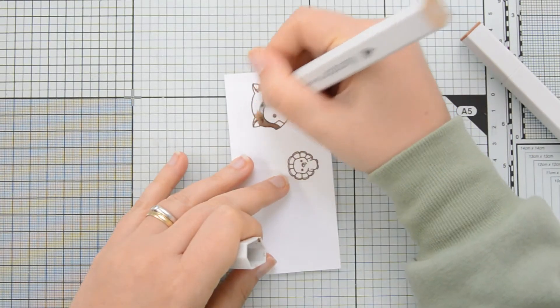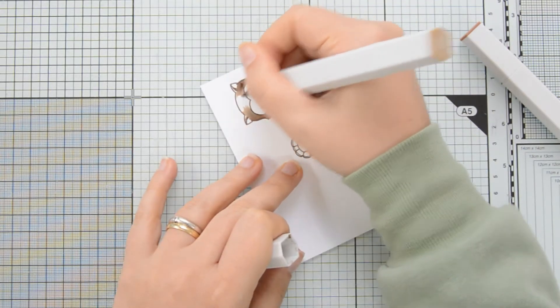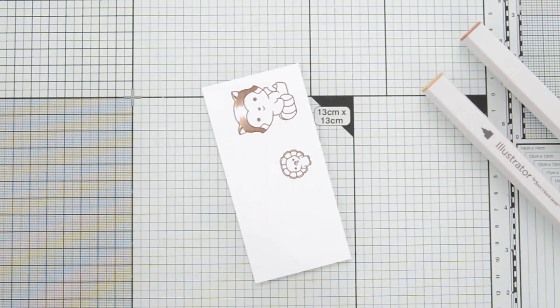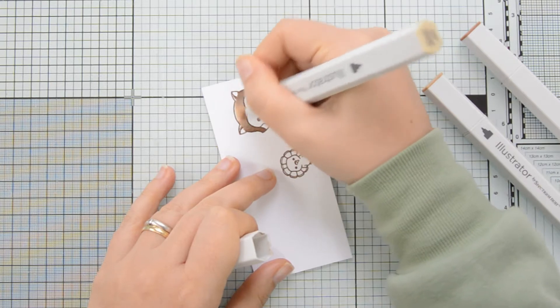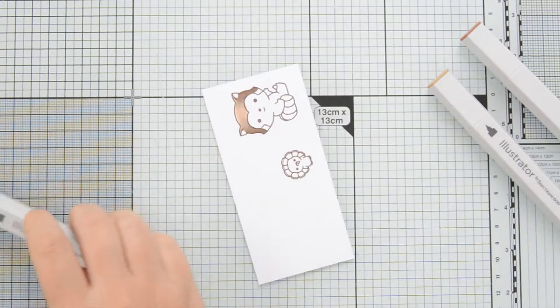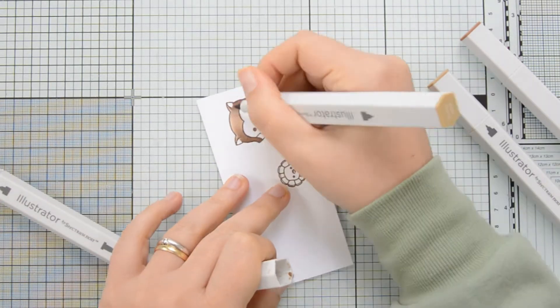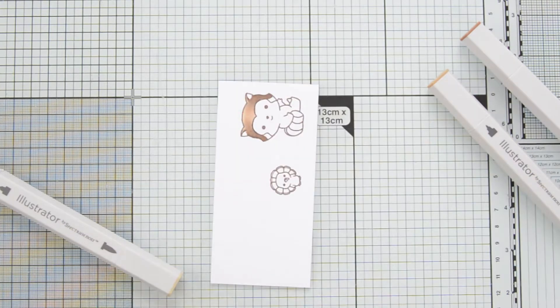I stamped them on some Neenah Solar White 110lb cardstock and this time I used some brown ink. I used Memento Dew Drops in the color Rich Cocoa and I decided to use brown rather than the more traditional black because I felt it would add even more to the fall feel of this card.